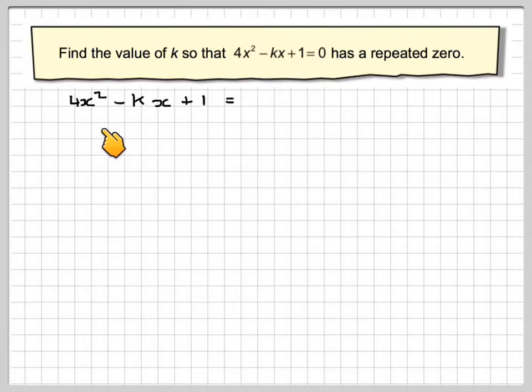So we've got 4x squared minus kx plus 1 equals 0. We're going to have ax squared plus bx plus c equals 0. We need to write that down underneath so that we can say that a is 4, b is minus k, and c equals 1. You need to be very careful with the signs with this type of problem.